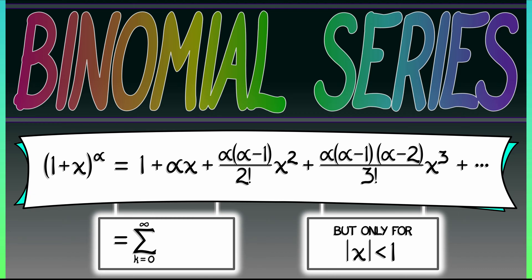We're going to write this as the sum k goes from 0 to infinity of a funny sort of symbol called alpha choose k, where you get the alpha on top of the k in parentheses, times x to the k. Now, what is that? What is that funny symbol?